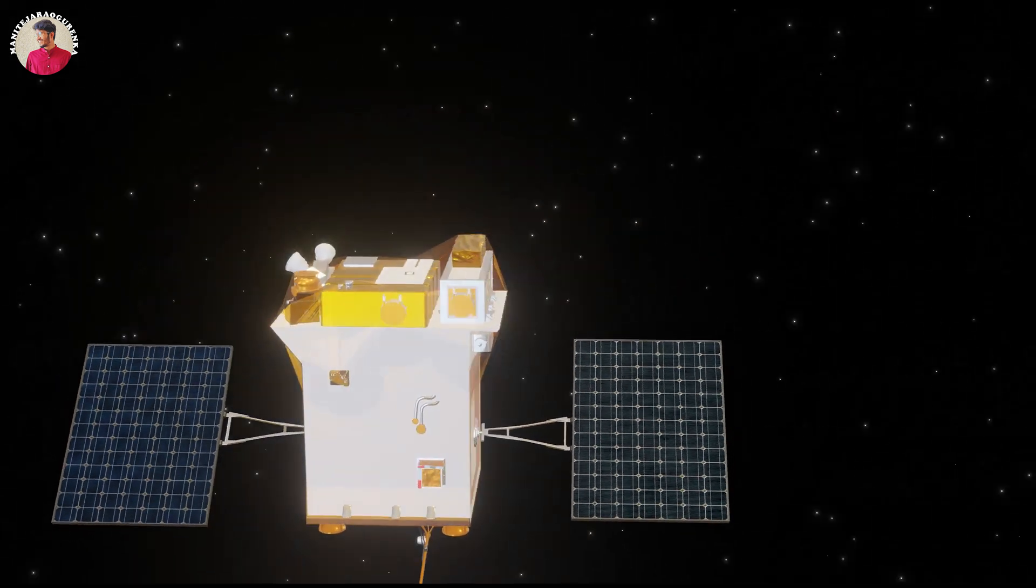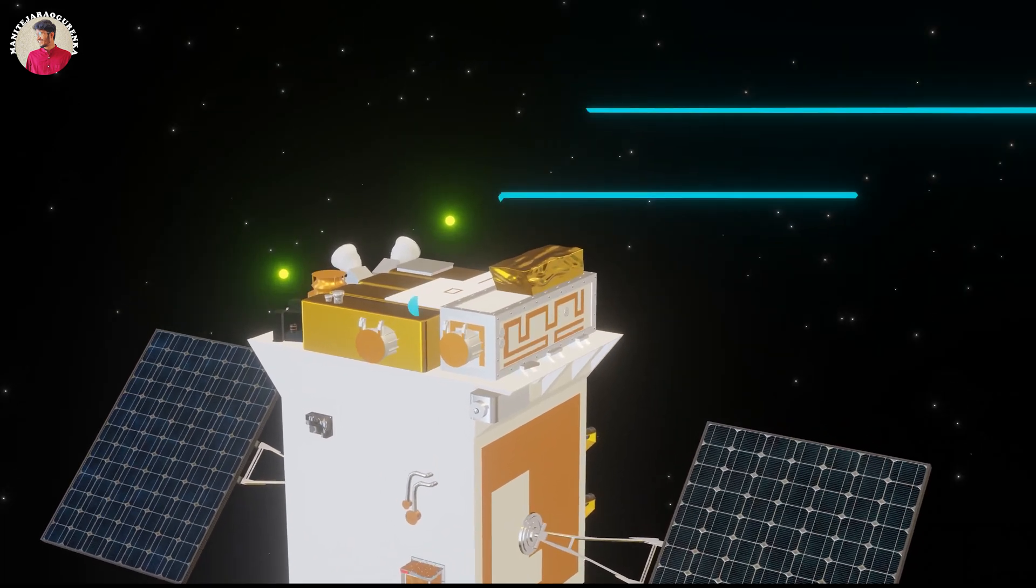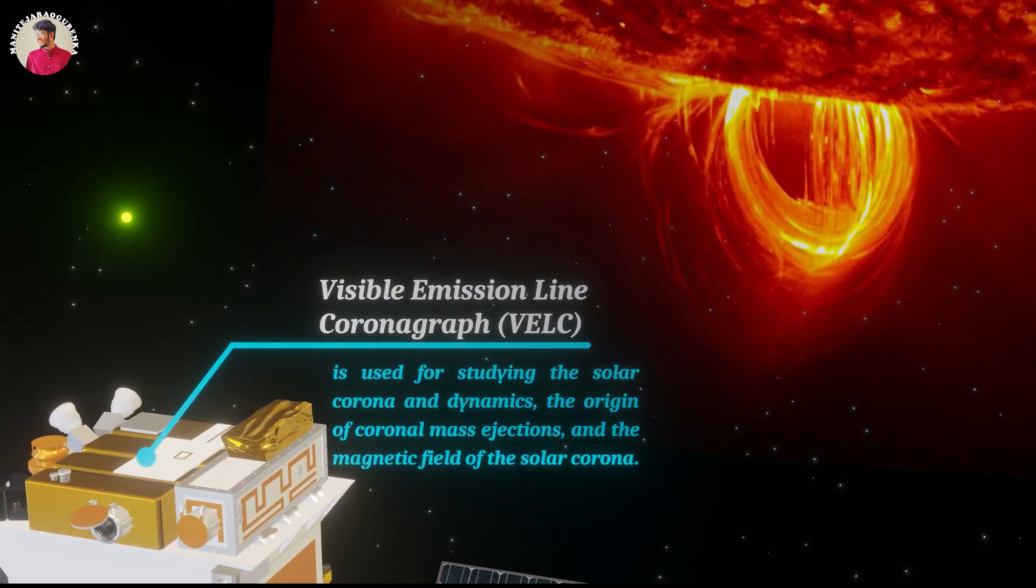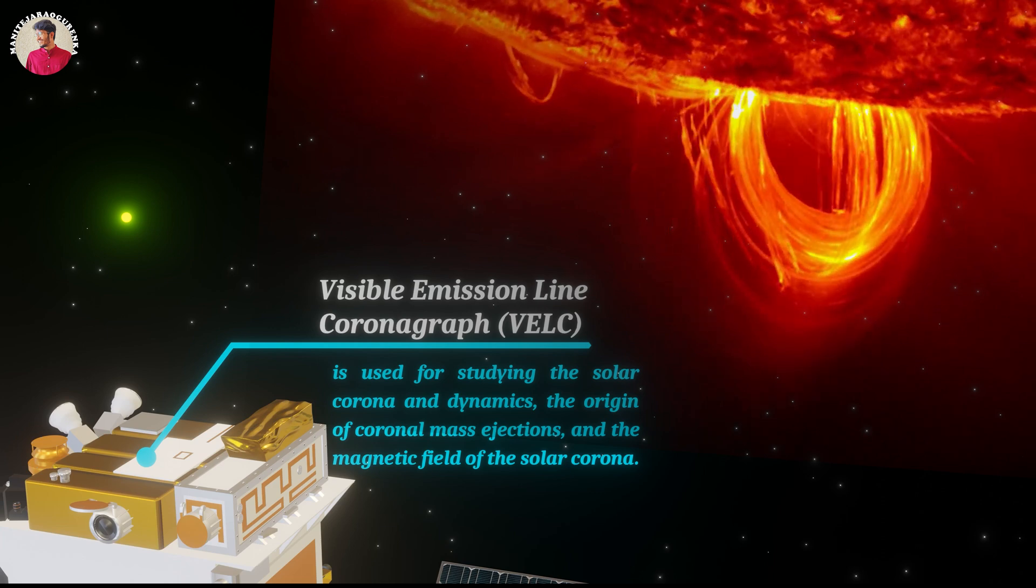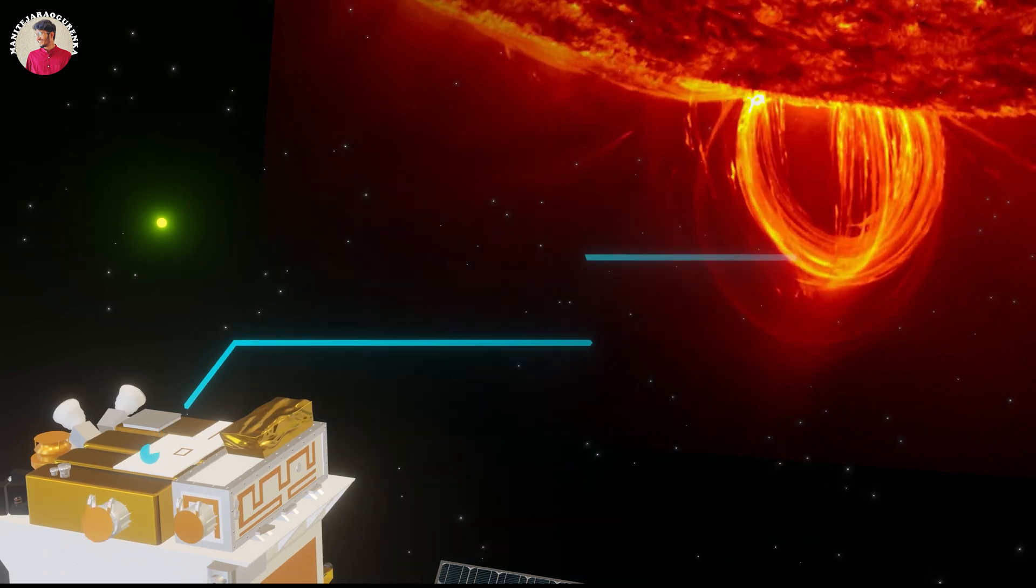Payloads are wrapped with multi-layers of insulation. Firstly, the Visible Emission Line Coronagraph is used for studying the solar corona and dynamics, the origin of coronal mass ejections, and the magnetic field of the solar corona.